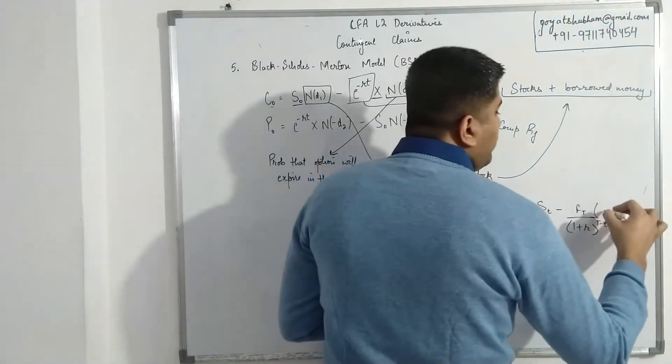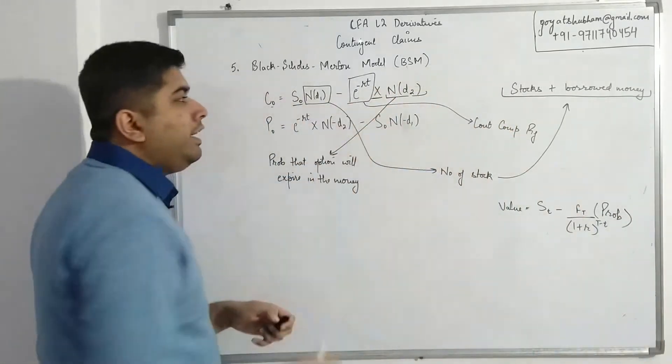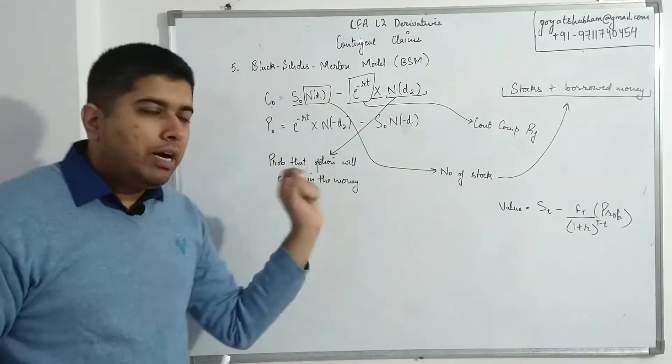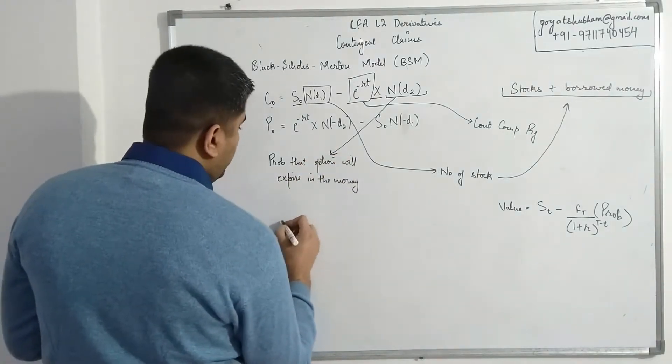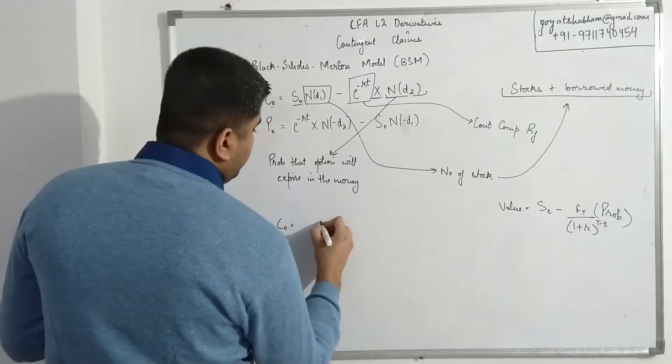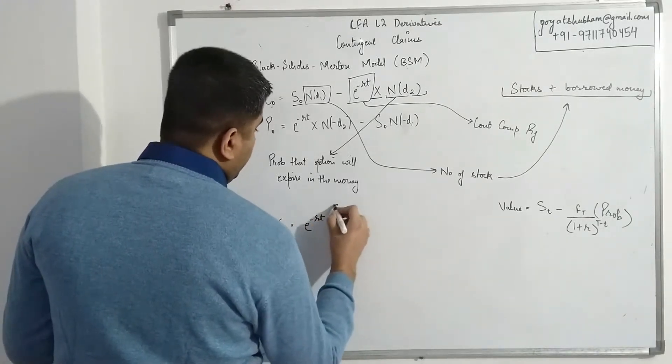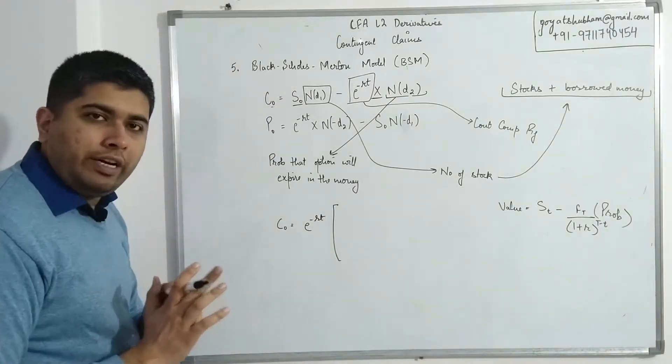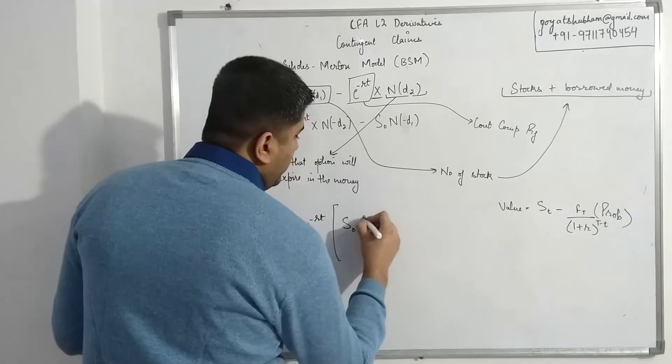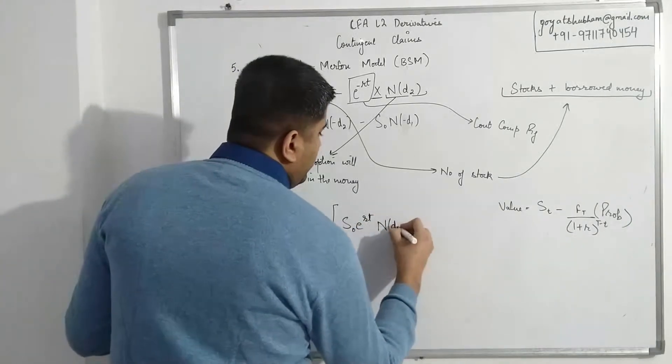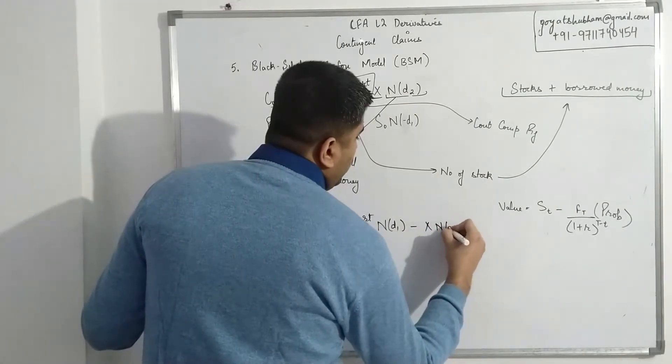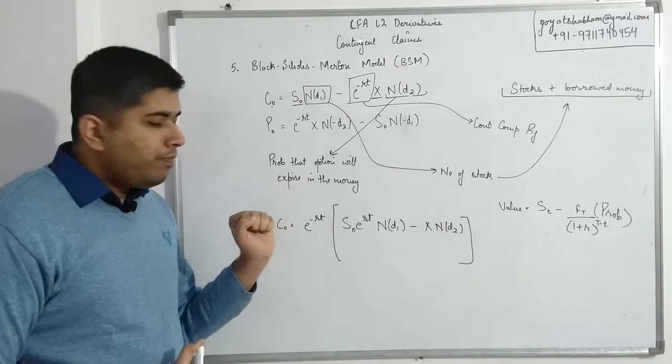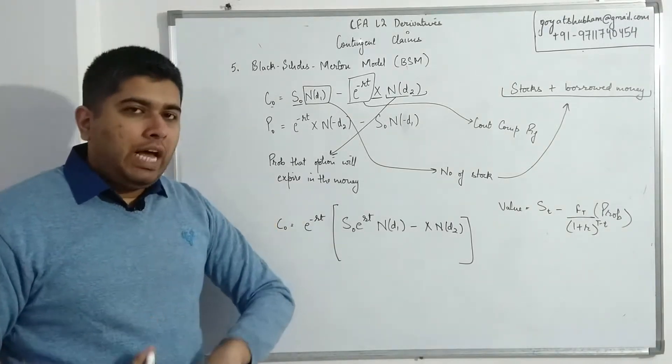What I am doing is I'm replicating the same concept, but in case of option however, instead of just having this, I have added the element of probability as well by way of N(d2), which is the probability that the option will expire in the money. Another way of understanding this same idea is if I say call option is equal to e^(-rt)—so I take this value common. So I have taken this value common, which means everything inside I will discount it using this continuous component rate: S_0 * e^(rt) * N(d1) - X * N(d2).